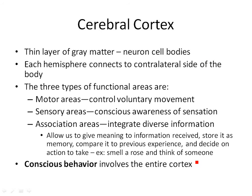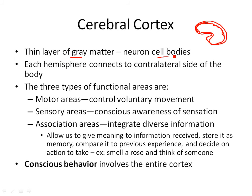Now the cerebral cortex — when you talk about the cerebral cortex, think about the cerebrum. The outermost layer of most organs is called the cortex, so the outermost layer of the cerebrum is the cerebral cortex. That's where the gray matter is. What makes it gray are the cell bodies — there's no myelin, no myelinated axons there — so this is where the cell bodies are.